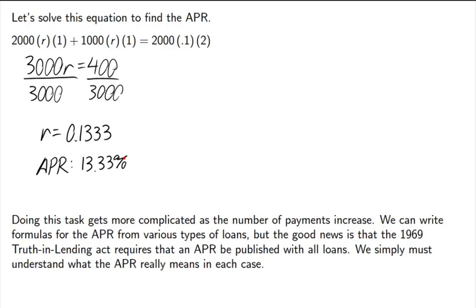This APR calculation gets complicated — we only did it for two payments and it would get significantly harder for more. Fortunately, a law passed in 1969 called the Truth in Lending Act requires that the APR be published on all loans. So we don't have to calculate the APR ourselves; it's always given to us so we can use it to make a judgment on what is the best loan for us.